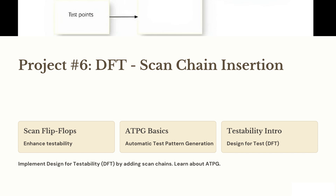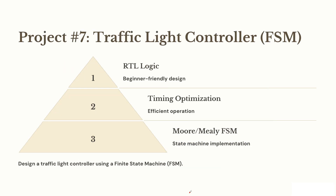Project 7 is the Traffic Light Controller using FSM — oh, the classic! Moore or Mealy? Pick your side — it's Marvel vs DC but in Verilog. Great for mastering state machines and timing optimization. And hey, you can finally control traffic, even if it's just simulated.